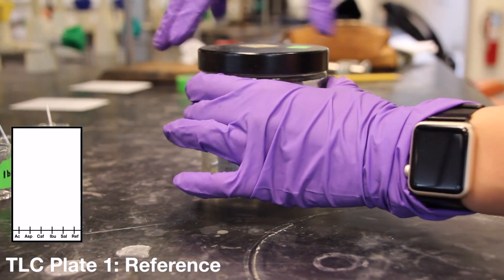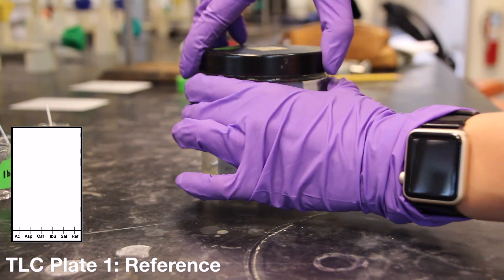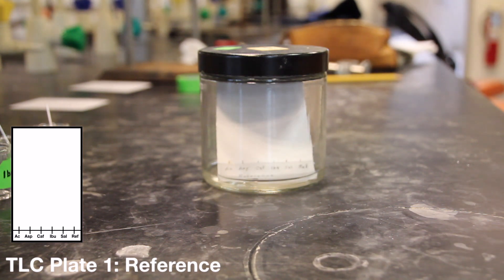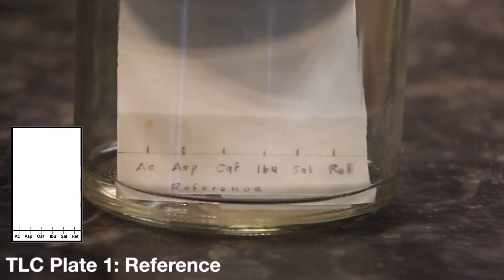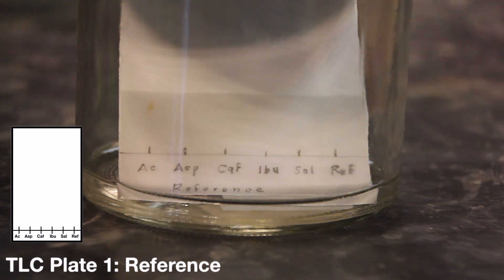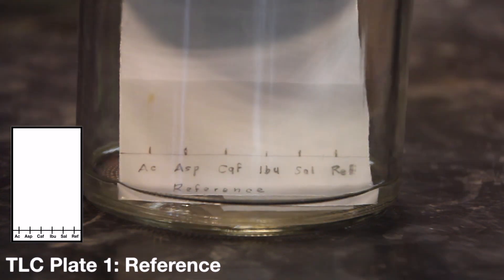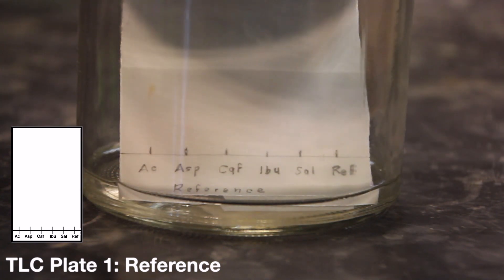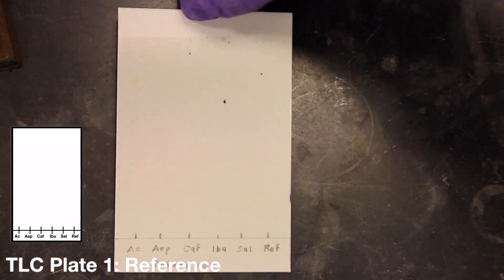Close the jar and allow the plate to develop. It is important not to move or shake the chamber while the plate is developing. Once the solvent level has risen to a level of about 0.5 cm from the top of the plate, remove the plate from the chamber, and using a lead pencil, immediately mark the position of the solvent front.